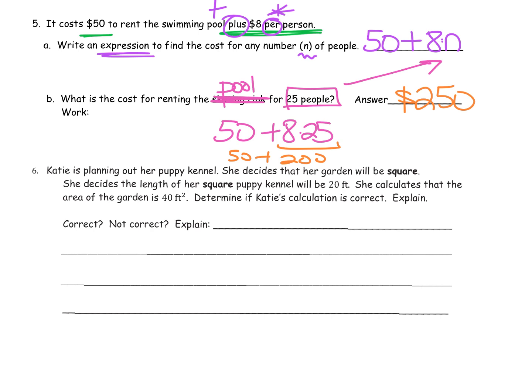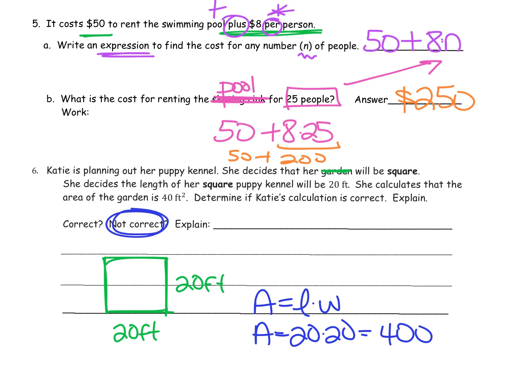And then number six. Katie is planning out her puppy kennel. She decides that her puppy kennel will be square. So let's draw a picture. Here's my square kennel. She decides the length of the square kennel will be 20 feet. And because it's a square I know my other side will also be 20 feet. She said the area is 40. Determine if she's correct. Well I know to find area we do length times width. So to find the area I would do 20 times 20 which I know is 400. So is she correct? Nope she's not correct. And then you can write why, knowing that it should have been 400 not 40. So make sure you give me a nice sentence explaining what she did wrong.